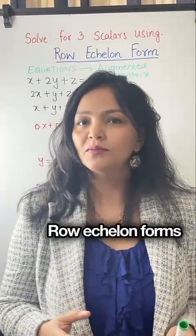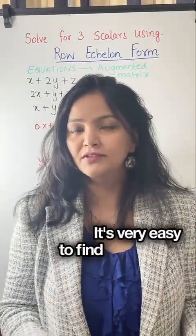And that's it. Row echelon form makes it super clear. It's very easy to find out scalars using this method.